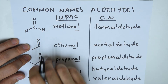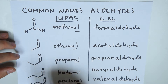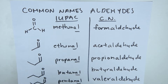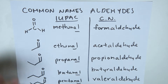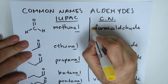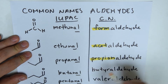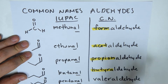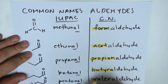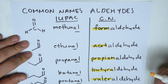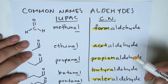It's really important that you memorize these, and there's really no other way to get around this other than memorization. These common prefixes are useful not only for aldehydes, but for other compounds also derived from carbonyl groups, such as carboxylic acids and amides, which we will see later on.